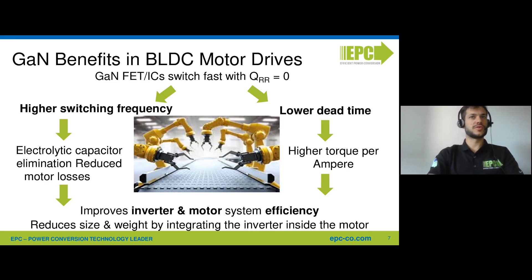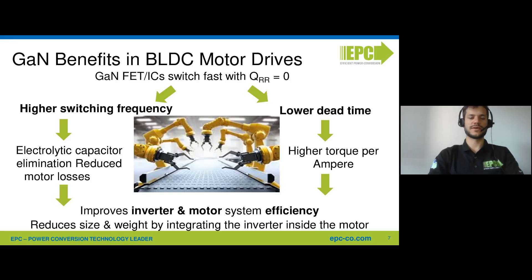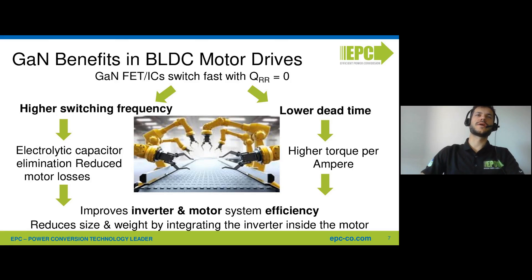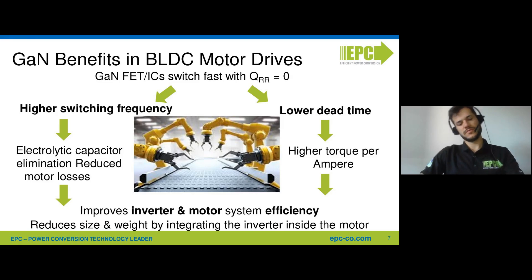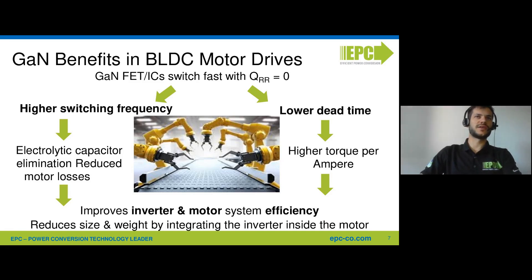At the same time, it's possible to reduce the dead time considerably. This helps in basically eliminating the sixth harmonic, making the excitation closer to a sinusoidal waveform and enhancing the torque-per-ampere ratio. Also, even though in the symbol of GaN FETs you will see more or less the same symbol as a MOSFET because there is reverse conduction, there is not a physical diode. So the reverse recovery is zero.